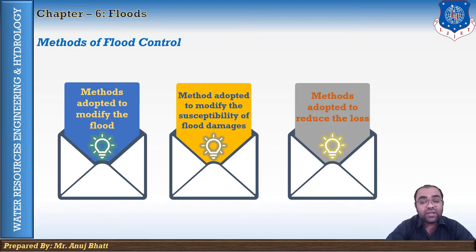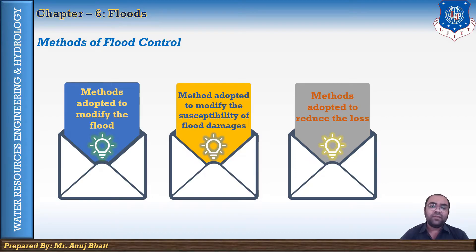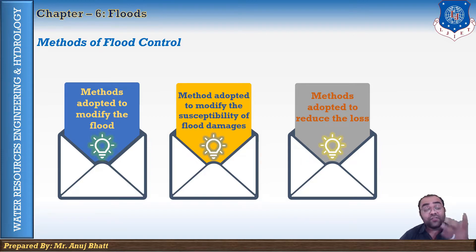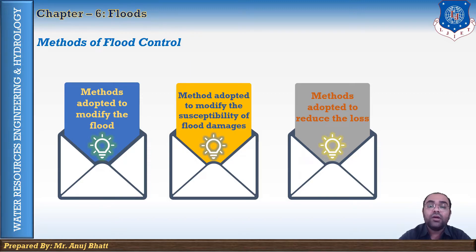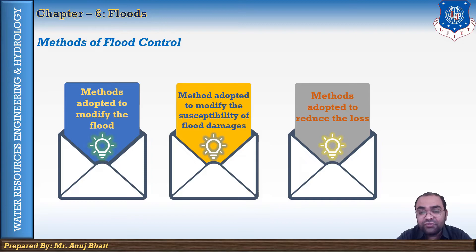Methods adopted to modify the susceptibility of flood damage include flood plain management, adoption of suitable development policies, structural changes, flood proofing, flood forecasting, and flood warning. Methods adopted to reduce loss due to flood include emergency evacuations, flood proofing, adopting suitable public measures, and flood insurance. These are the probable methods of flood control.